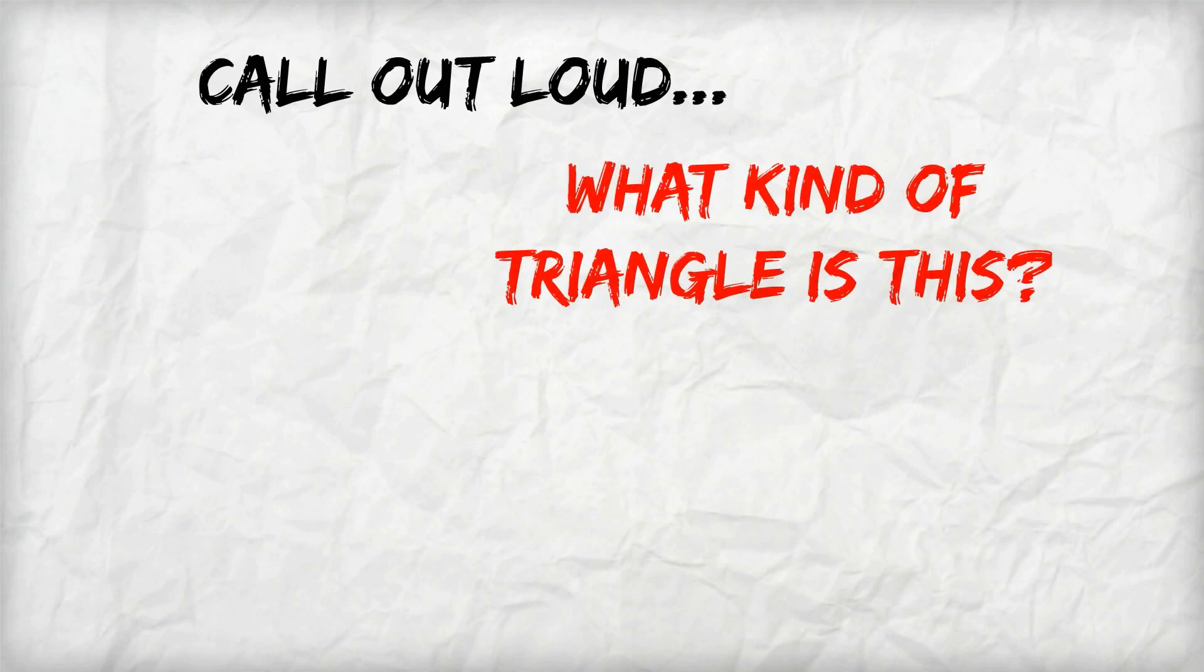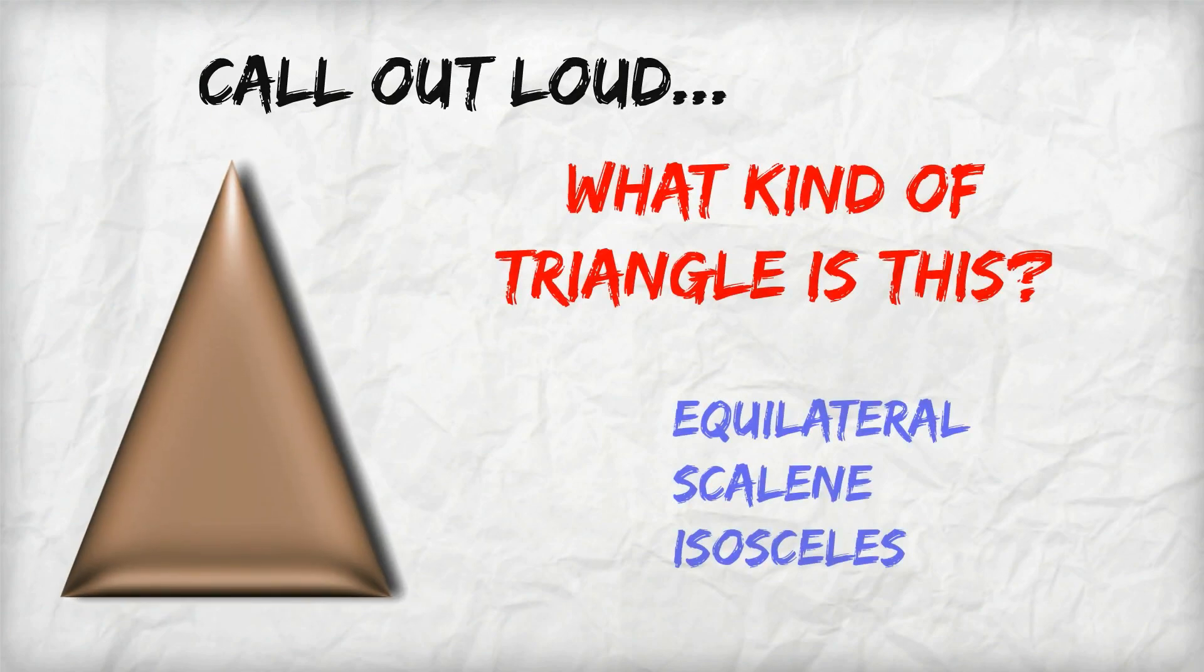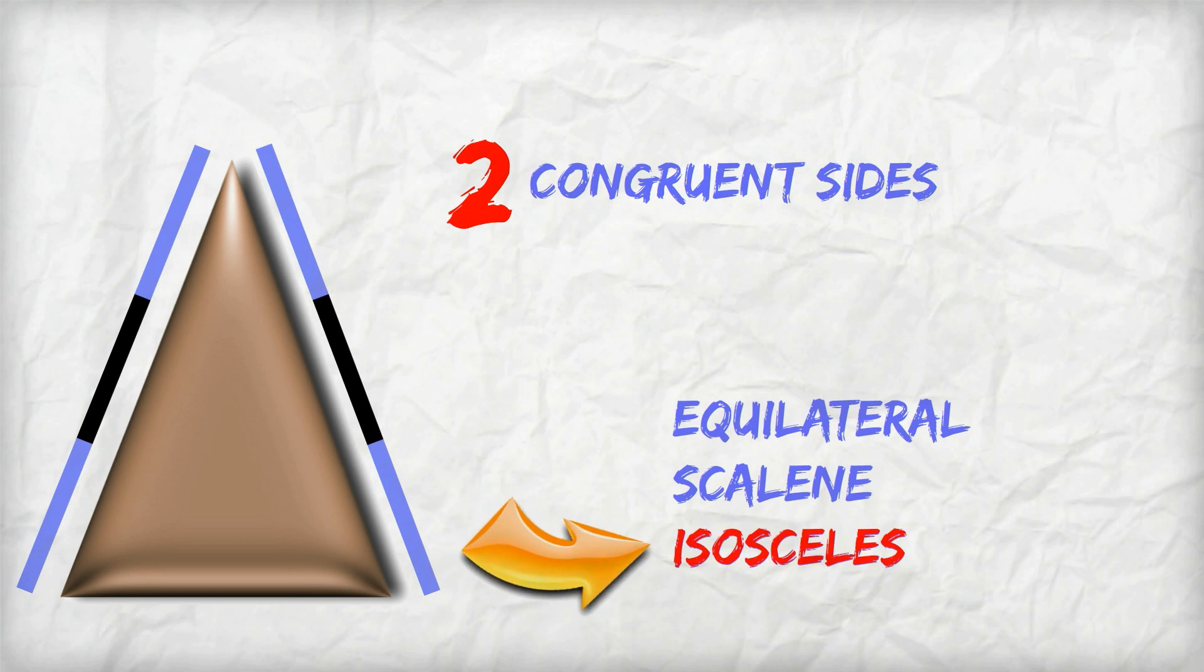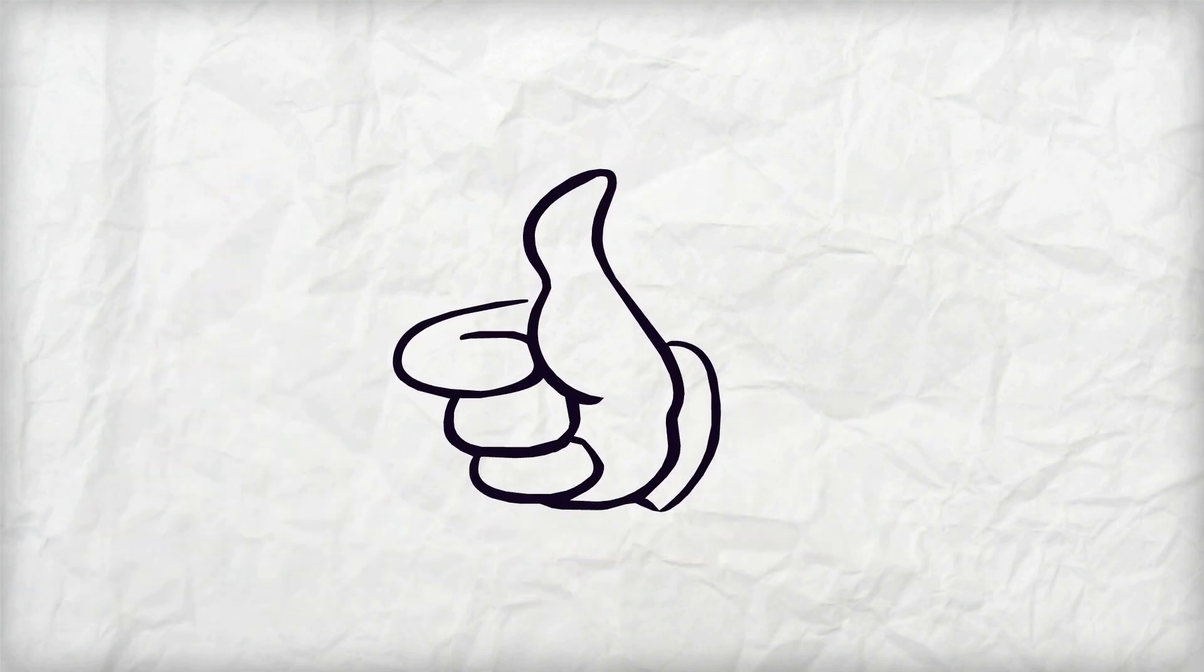Call out loud when you know what kind of triangle is this. It has two equal sides or two congruent sides, so it's an isosceles triangle. Thumbs up if you were right. Ready for the next one? Let's go!